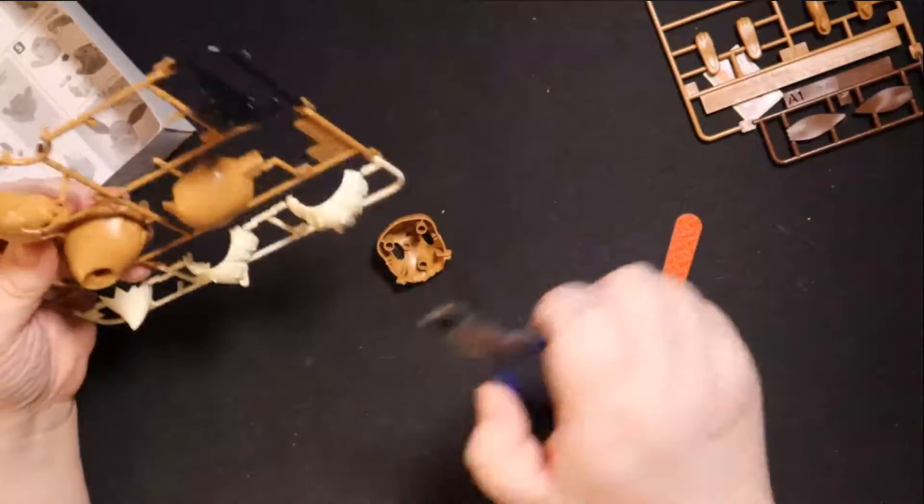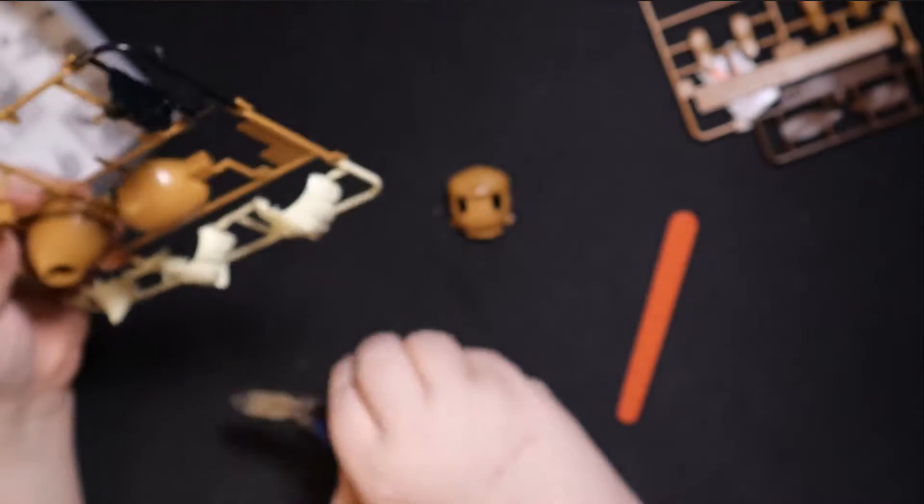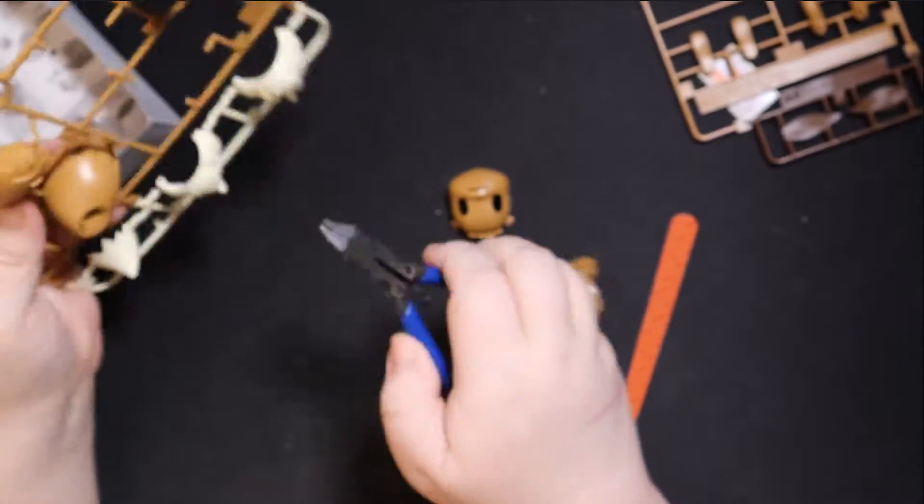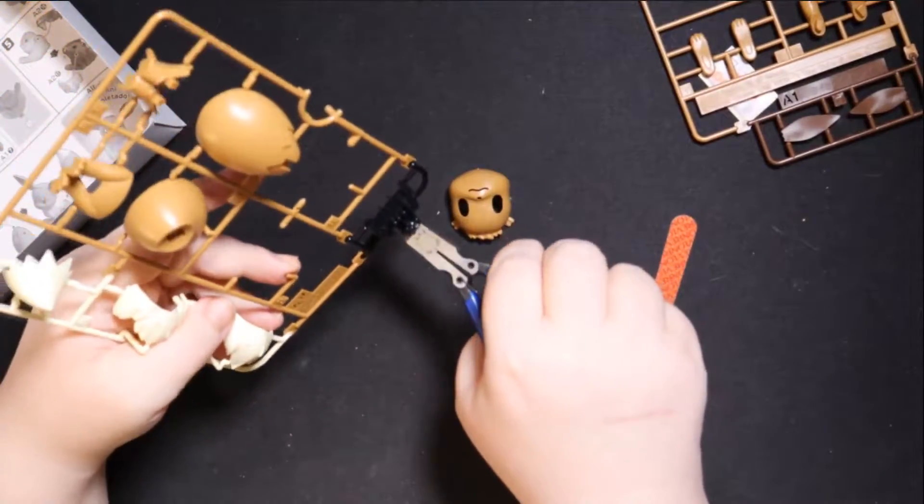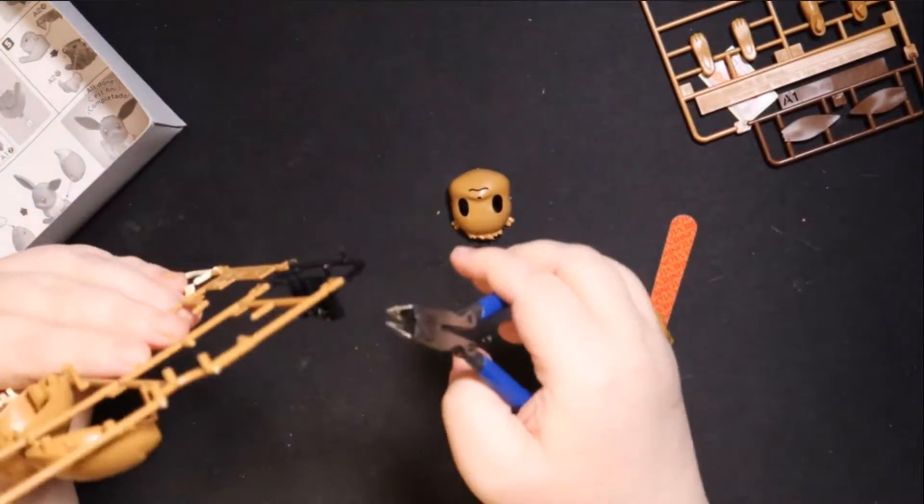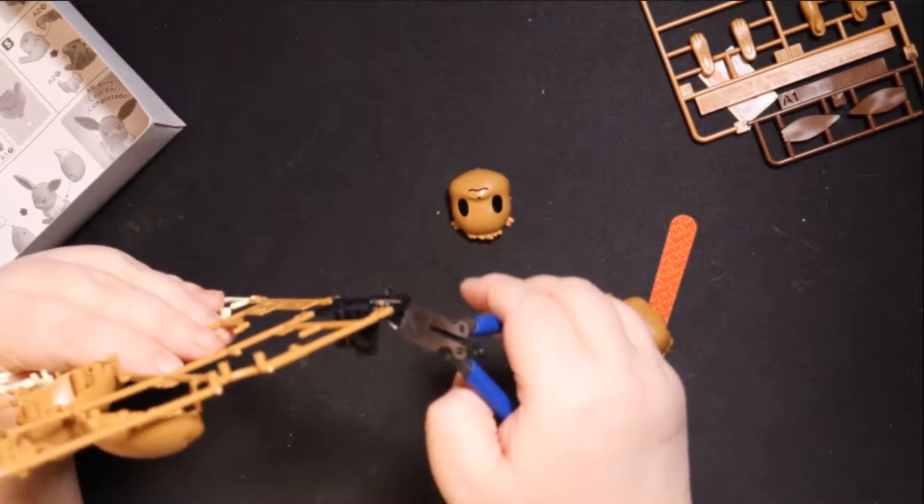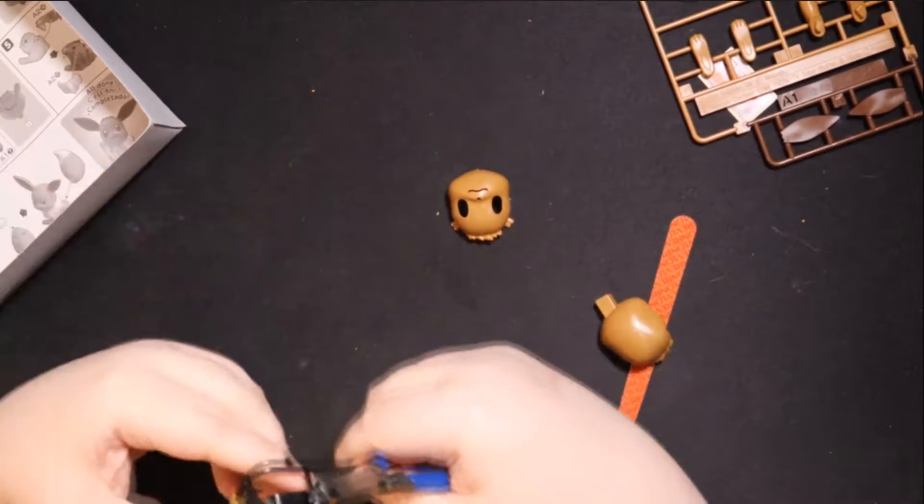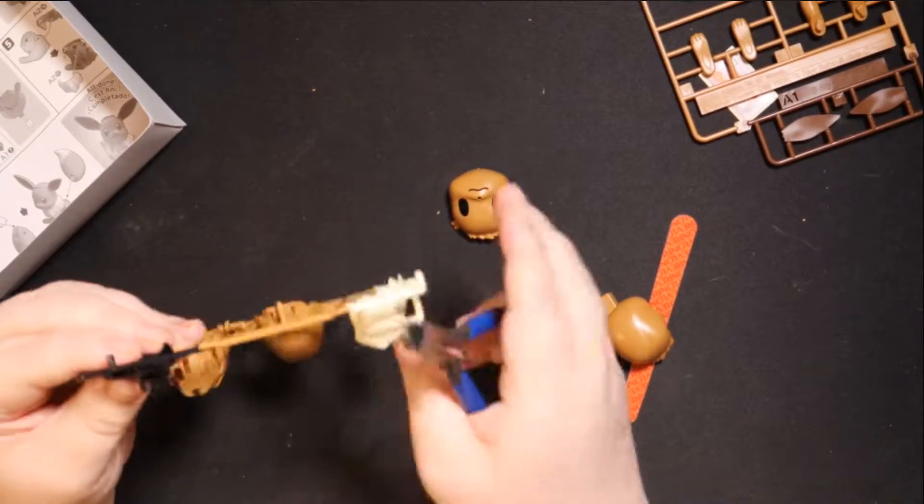We will put that sprue away and we will focus on Eevee's head, which is right here, part of it. It looks like that part just wants to drop off. So we will just put it through, let it drop off. This looks like the other part, right? Yep. This is the other part of Eevee's head.